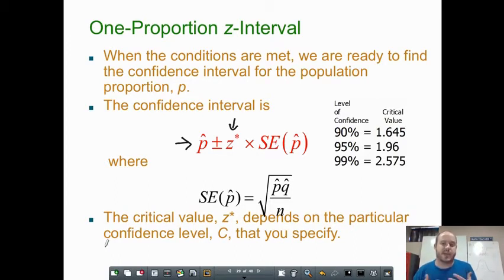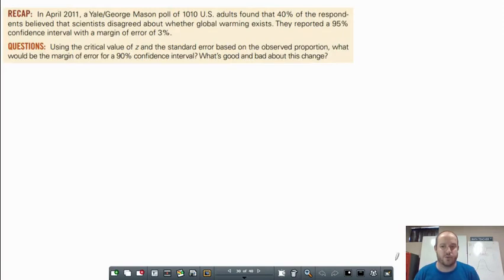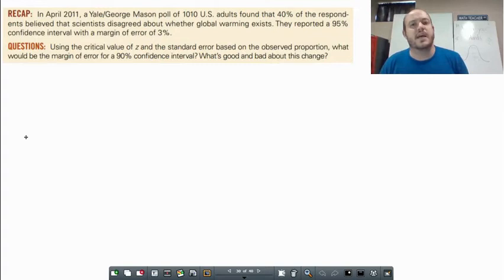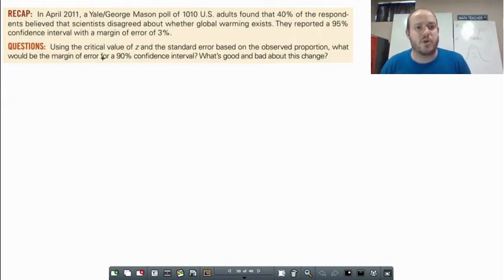The critical value z* depends on the particular confidence level you specify. Let's go ahead and dive into a word problem. In April 2011, a Yale-George Mason poll of 1,010 U.S. adults found that 40% of respondents believe that scientists disagree about whether global warming exists. They reported a 95% confidence interval with a margin of error of 3%. Using z* and the standard error based on the observed proportion, what would be the margin of error for a 90% confidence interval?